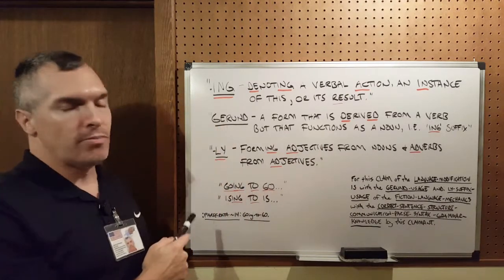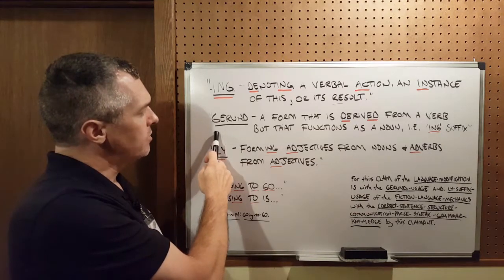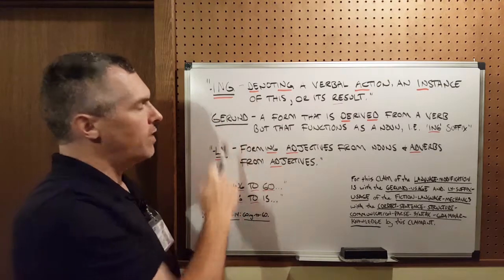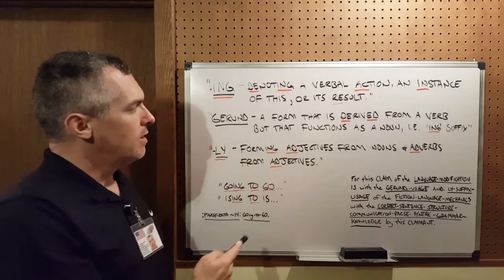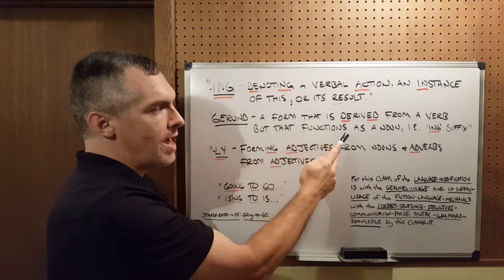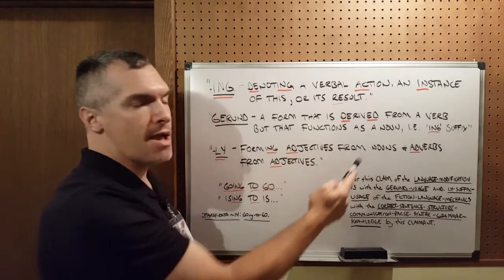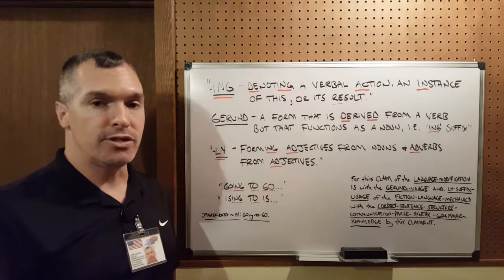To understand a little bit more about what ing is, we'll look at what is called a gerund, which if you put ing at the end of a word, it forms a gerund. And that is a form that is derived from a verb but that functions as a noun, i.e., adding the ing suffix.